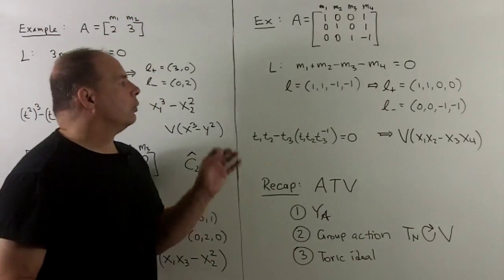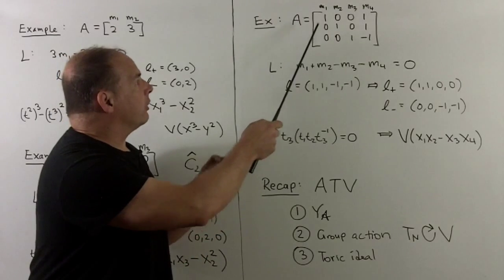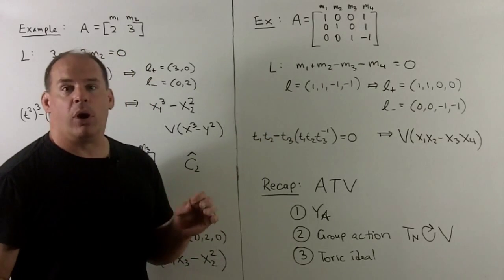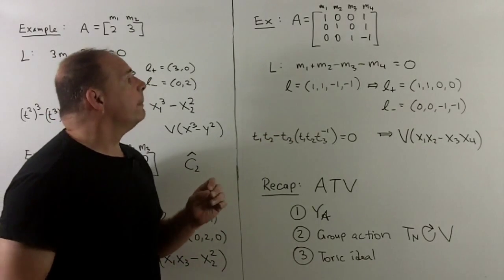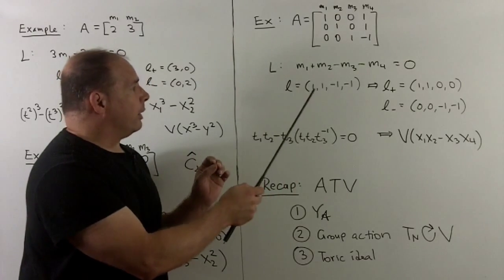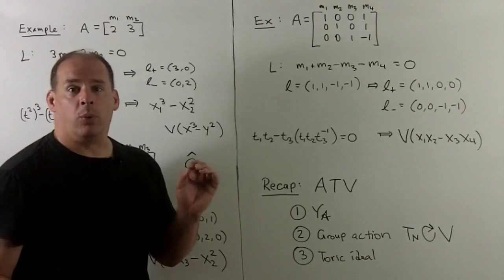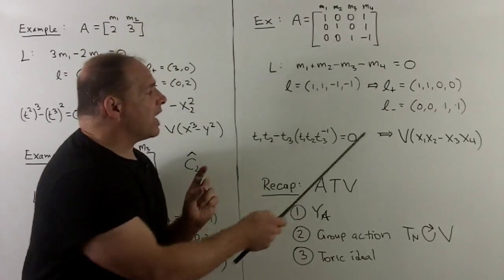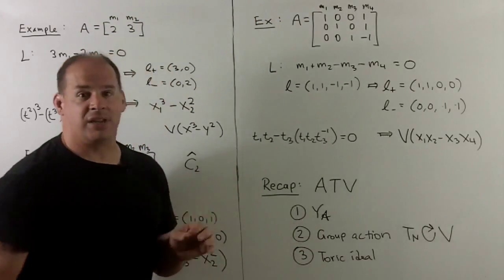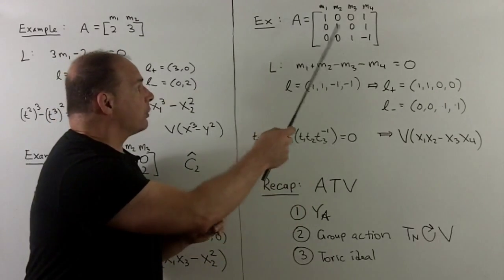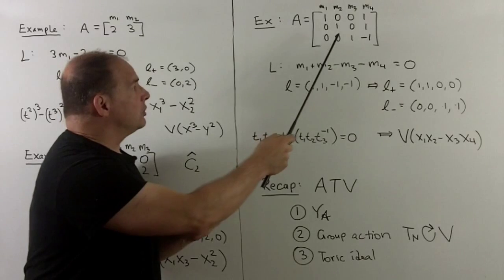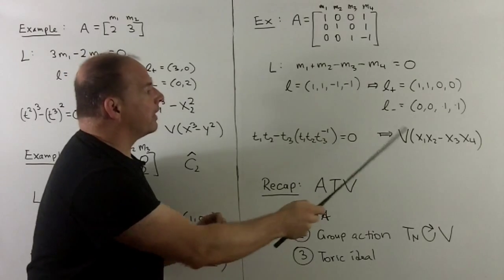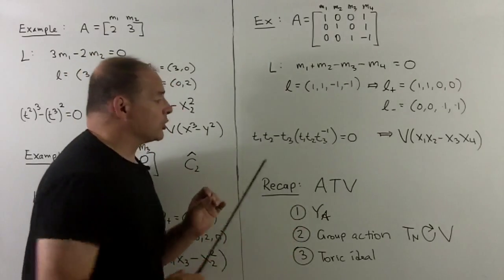Finally, another example with a single relation. Take A with columns (1,0,0), (0,1,0), (0,0,1), (1,1,−1). The relation is m₁ + m₂ − m₃ − m₄ = 0. So L is generated by (1,1,−1,−1). L⁺ = (1,1,0,0), L⁻ = (0,0,1,1), giving the ideal generated by x₁x₂ − x₃x₄. Checking with our characters — putting T₁, T₂, T₃, and T₁T₂T₃⁻¹ in for x₁, x₂, x₃, x₄ — we see that we get 0 as promised.